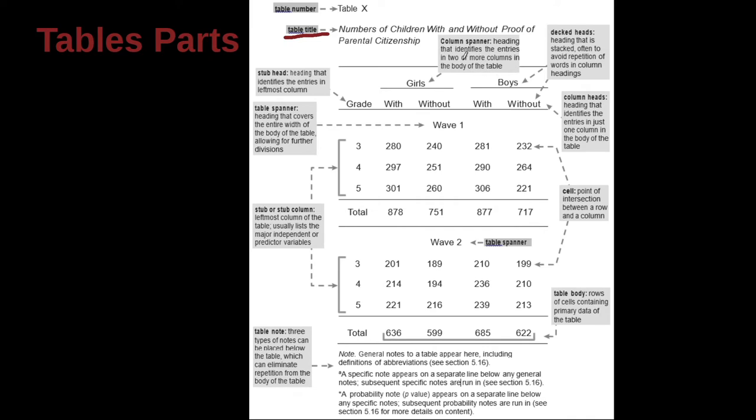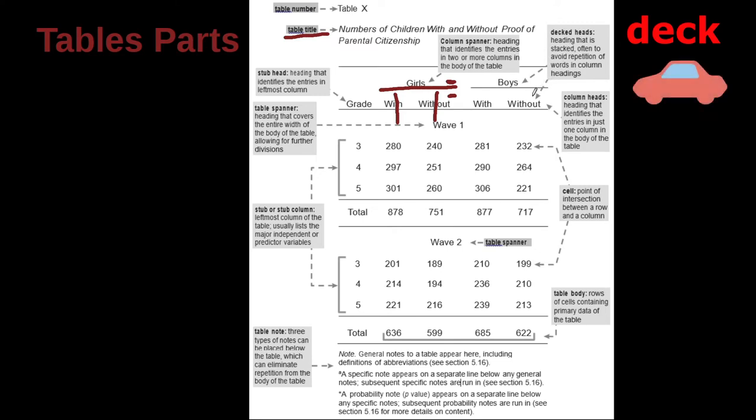So let's look at these names very quickly. Girls and boys, this is called a column spanner because it's going across columns. So we have a column here, and we have a column here. We're crossing columns. So this bit is called a spanner, a column spanner. Here we have the one level and then a second level. So this putting two levels together this way is called decked heads. Decked, D-E-C-K, like a deck, like a deck of cards, or decks on a bus, or decks on a ship. Different levels.